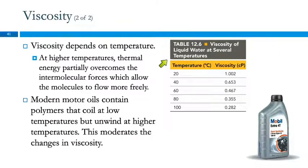Here we see a table of viscosity of water at various temperatures from 20 degrees Celsius up to 100. Viscosity goes from 1 down to 0.282. So higher temperature, lower viscosity.